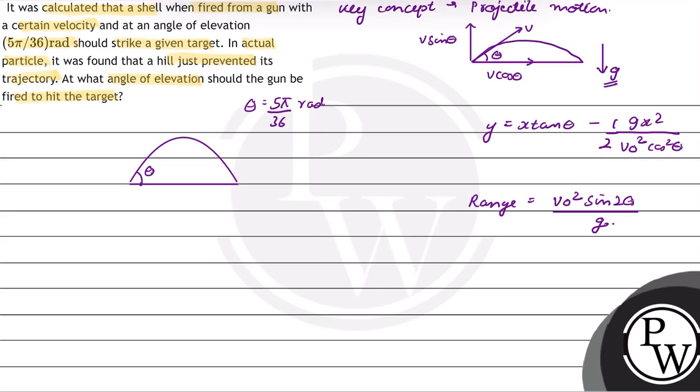But in actual practice, it was found that the hill just prevented the trajectory.